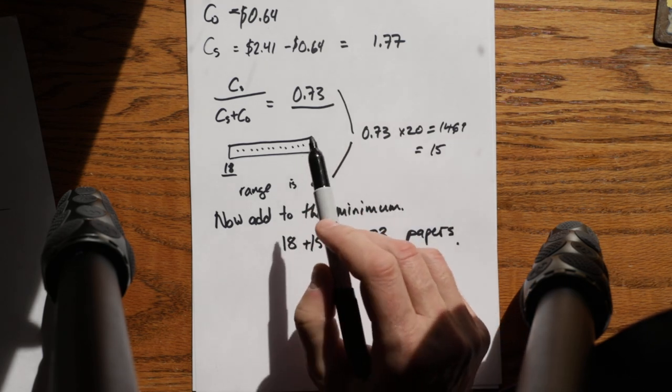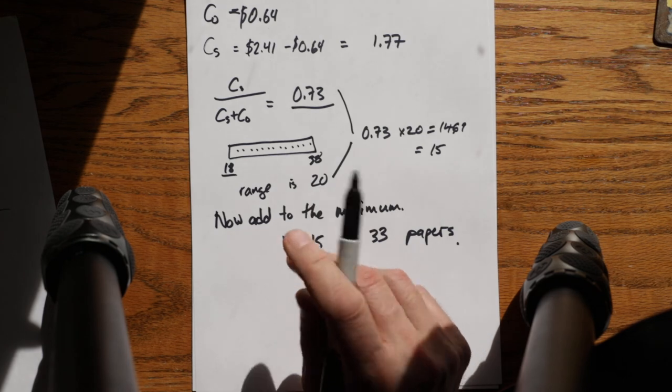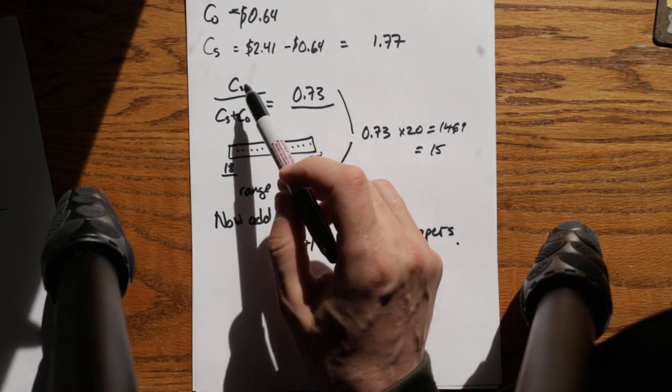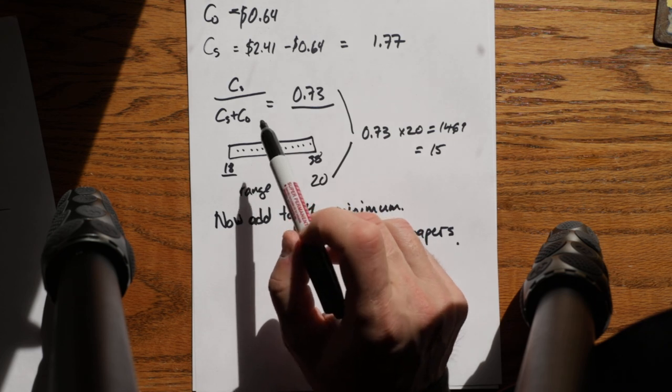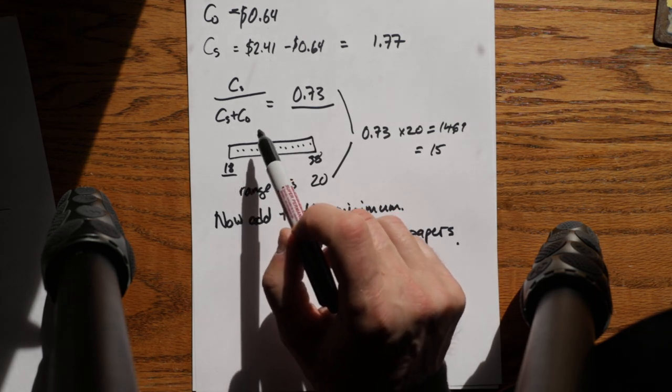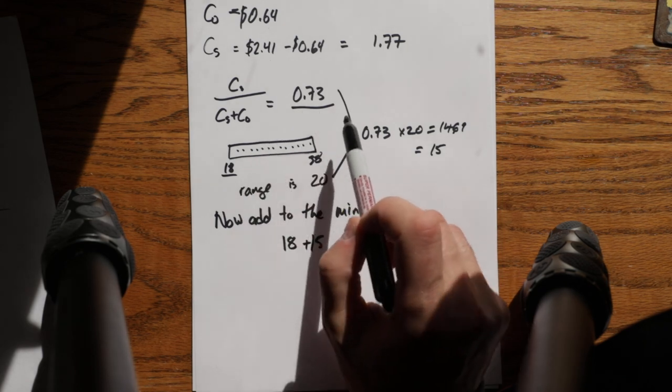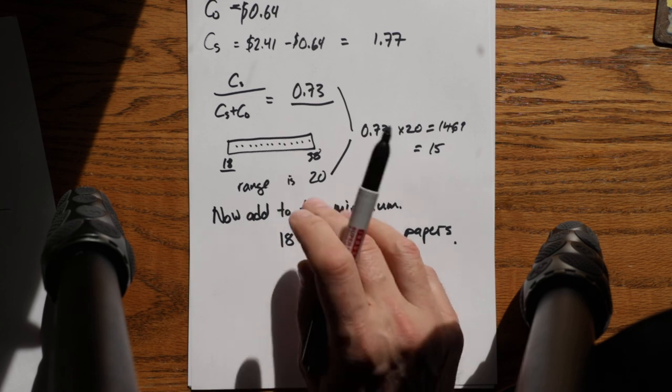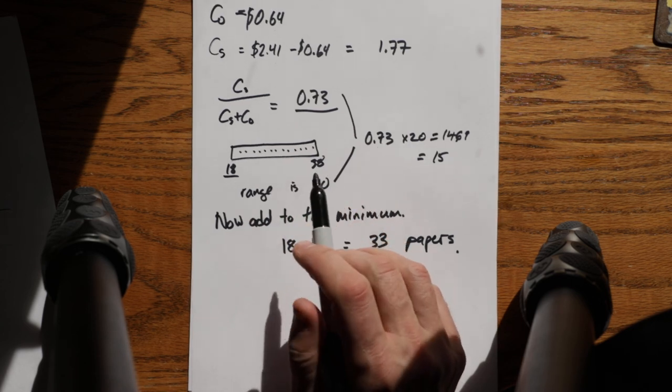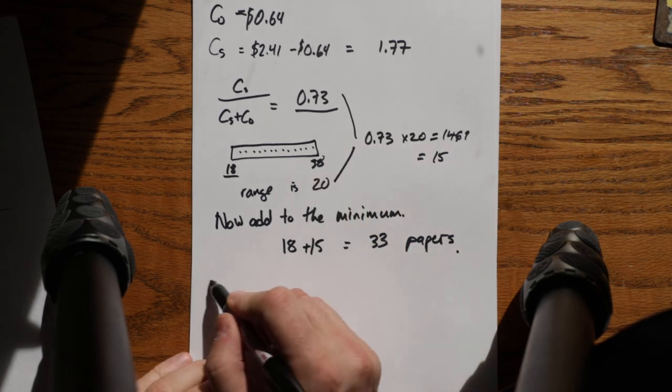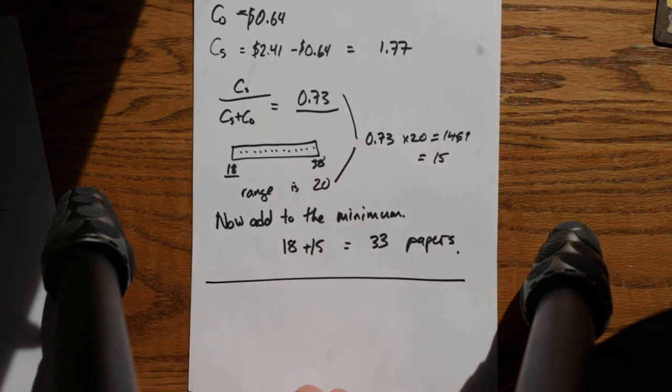This is a function of the relative size of cost of shortage and the cost of over ordering. As the cost of over ordering goes up, you have a lower number. If the cost of shortage goes up, you tend to order larger numbers.